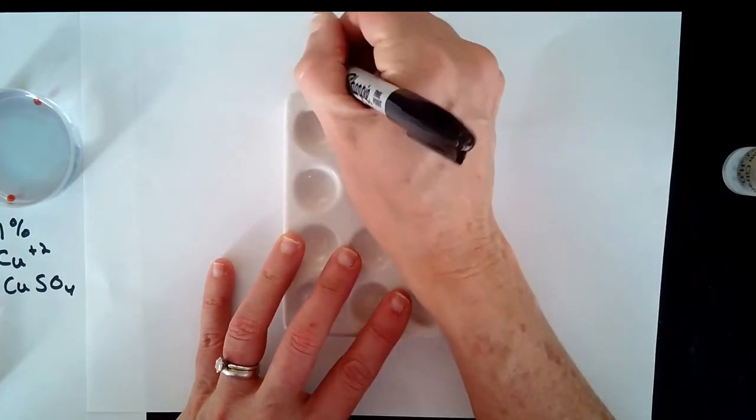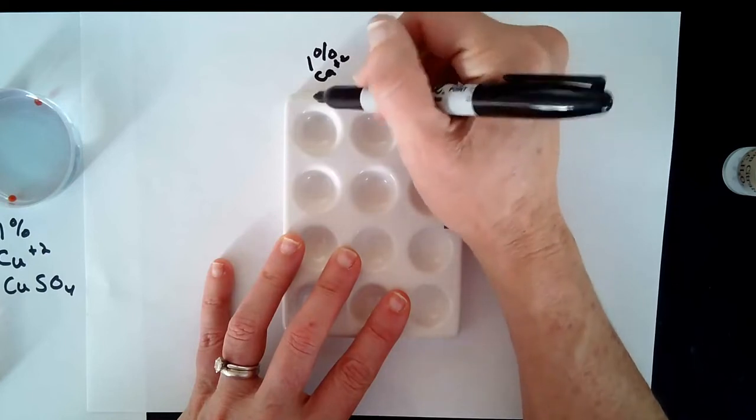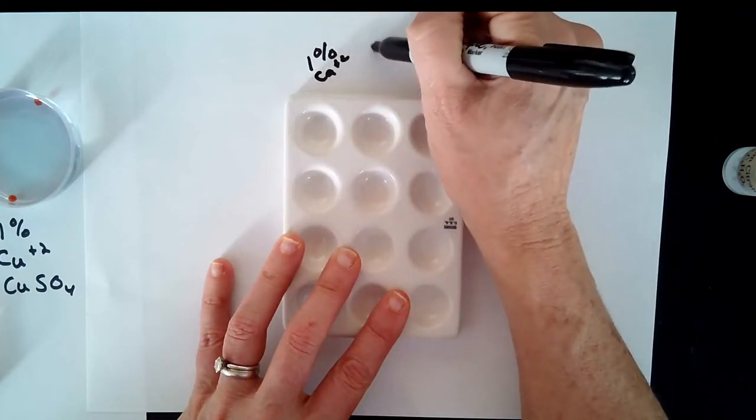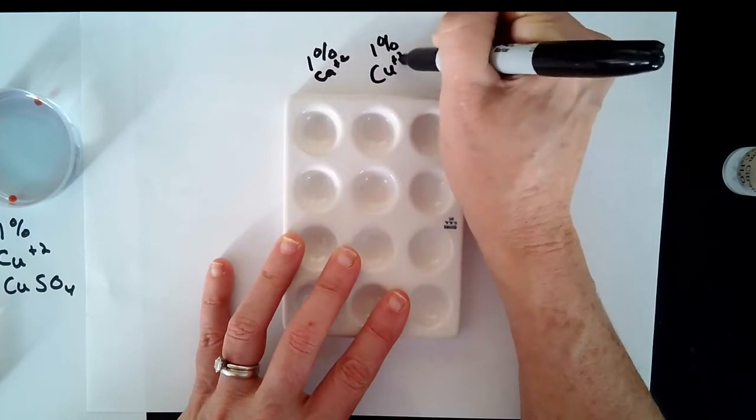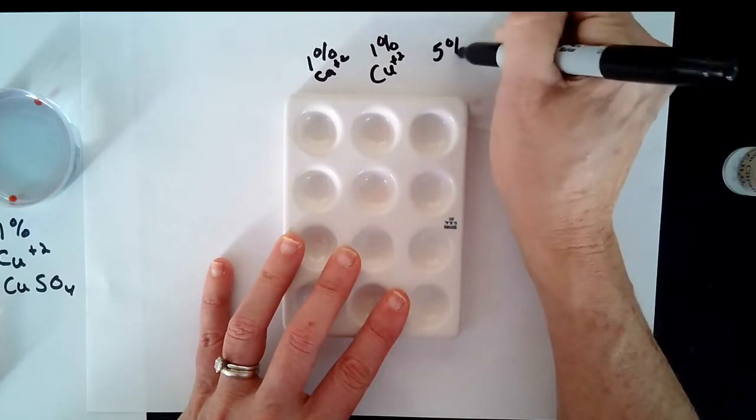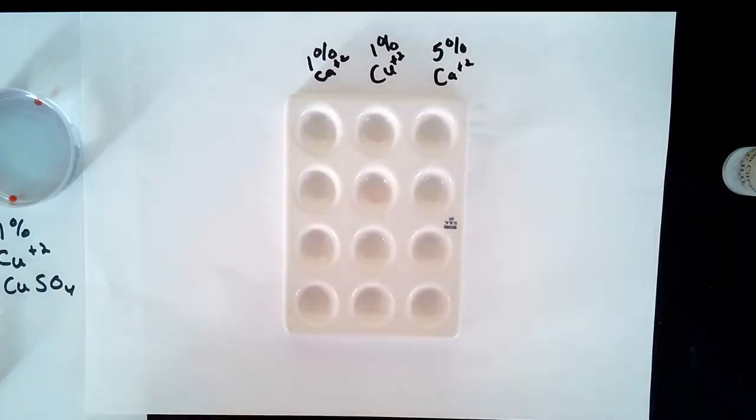So I'm going to label mine one percent, one percent Ca+2, so I know that these beads were made with the one percent calcium chloride solution. I'm going to mark the one percent Cu for the copper alginate beads, and then my third row will be the five percent calcium alginate beads.